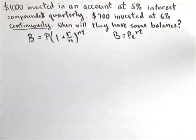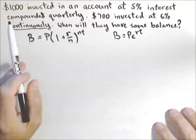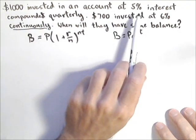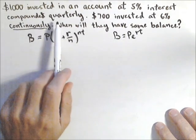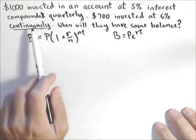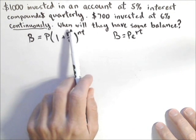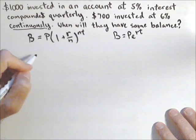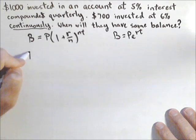This is a quick video showing how we can use the graphing calculator to find when two accounts are going to have the same balance. We have $1,000 invested at 5% interest compounded quarterly, and $700 invested at 6% compounded continuously. We want to know when they have the same balance, which means we need to make a formula for each account.